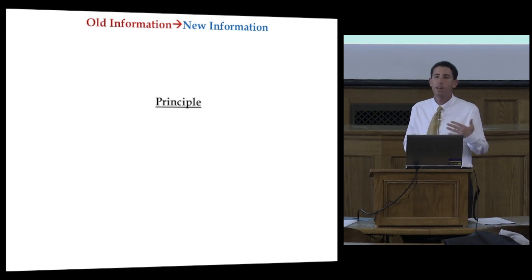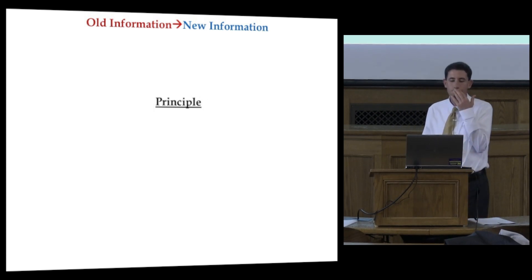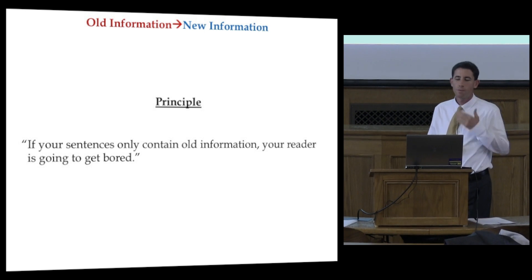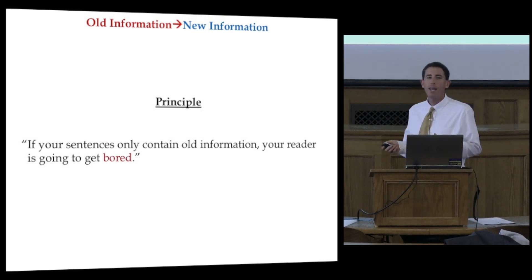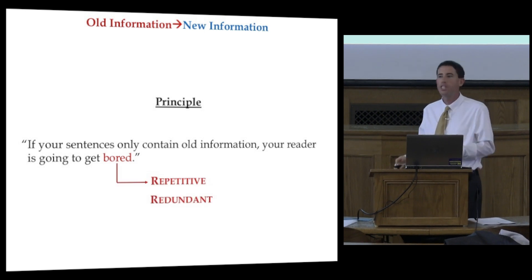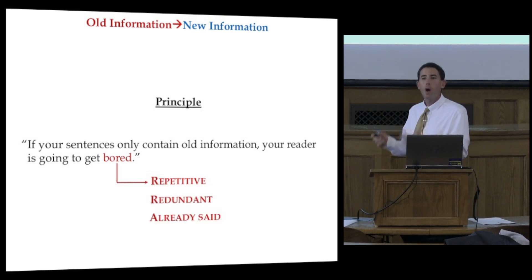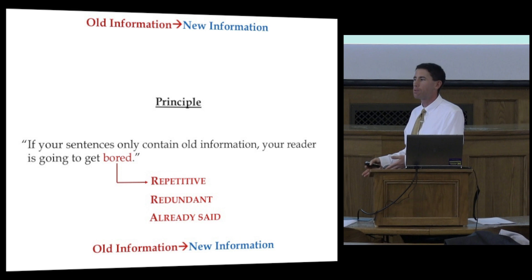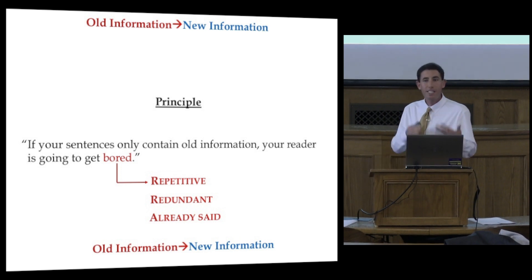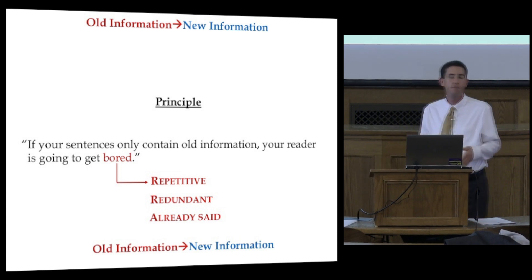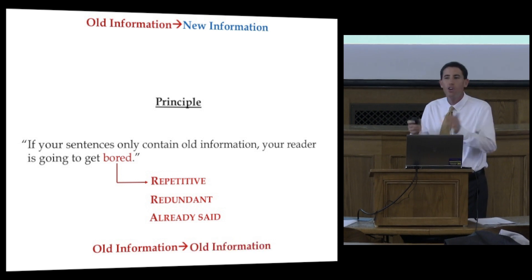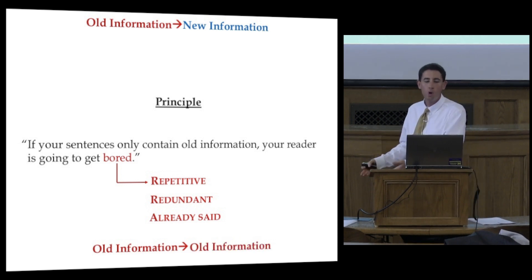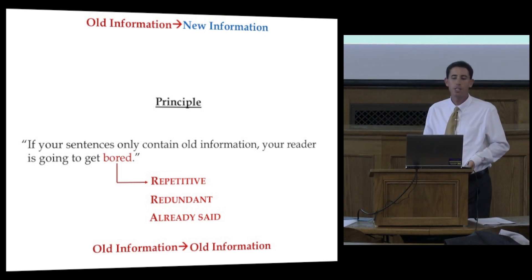We can break this down to a principle here. Mr. Telligan, you want to read this? If your sentences only contain old information, your reader's going to get bored. So if you're getting feedback on your writing that this is repetitive, or this is redundant, or you already said this, you have an old information to new information problem. The specific kind is old information, old information — you're not giving them anything new, so they're just going to get bored and annoyed.